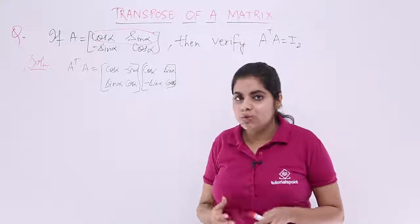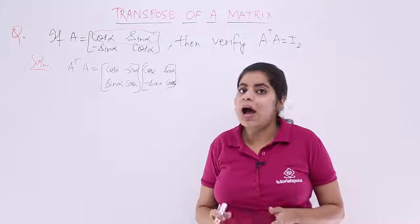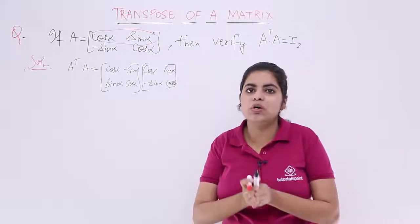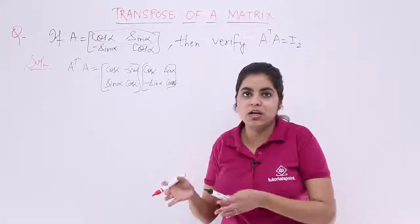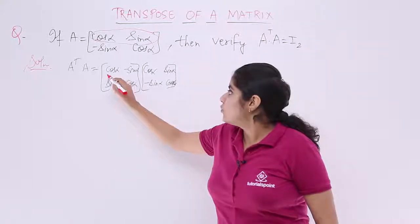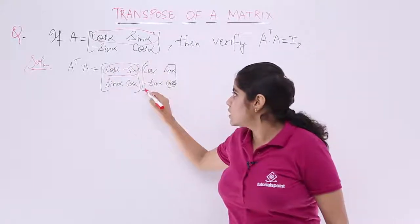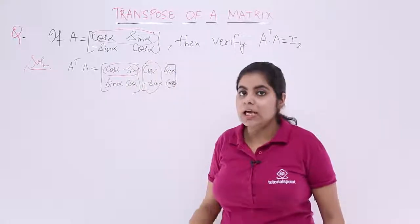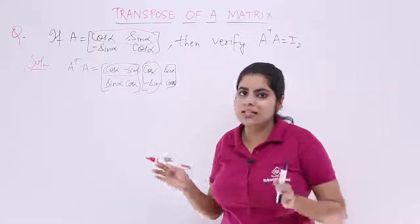Now we are just supposed to multiply these matrices. How to do the multiplication? You know that first row, first column, first row, second column, second row, first column, second row, second column. Right? So first row, first column need to be multiplied. Then first row, second column and then so on.